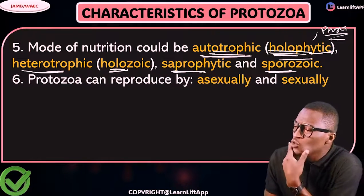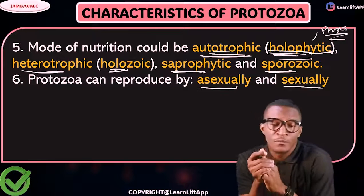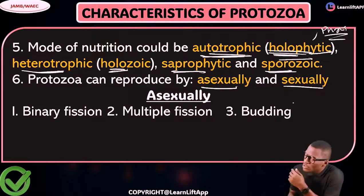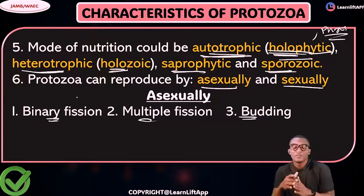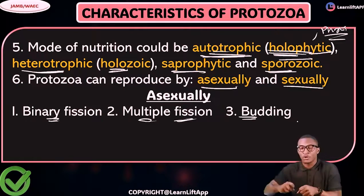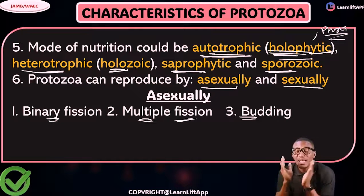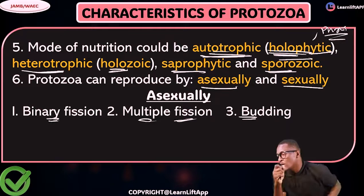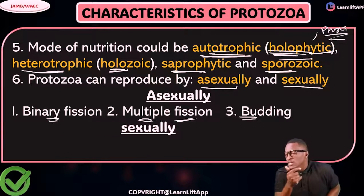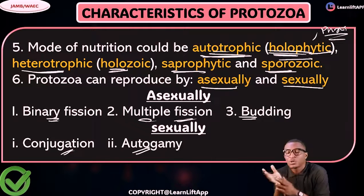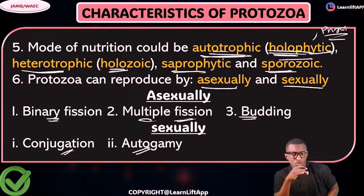Protozoa can reproduce asexually and sexually. Asexually, there are three methods: binary fission, where the organism splits into two; multiple fission, where it splits into many parts, which often occurs during unfavorable conditions; and budding. Sexually, there are two methods: conjugation and autogamy. Paramecium undergoes both conjugation and autogamy.